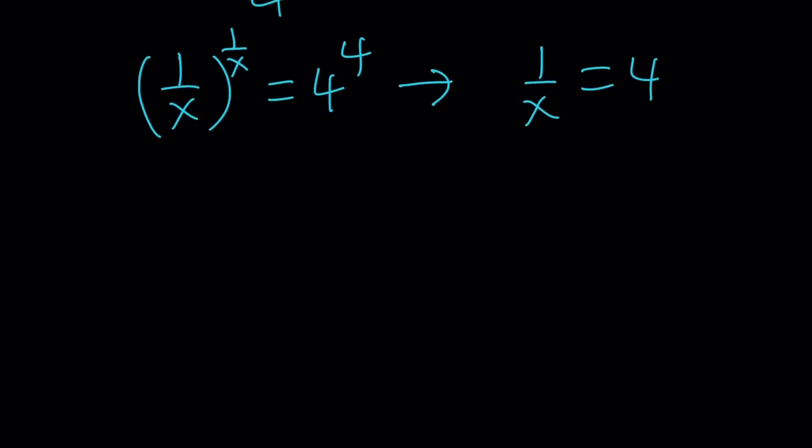The million dollar question is, is this the only solution? x equals 1 fourth. Obviously that's a solution. What about other solutions? So if you have something like a to the power a equals 4 to the power 4, do we get only one solution or more than one solution? Let's go ahead and take a look at the graph.